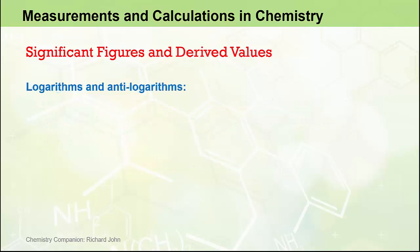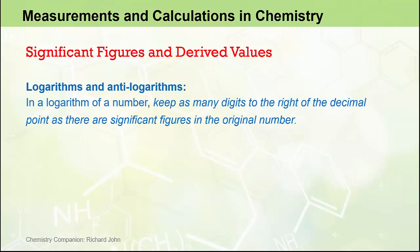Now we consider what we need to do when we take the log or the anti-log of a number. When we take the log of a number, we keep as many digits to the right of the decimal point as there are significant figures in the original number. So if we were to take the log of 9.57 × 10⁴, we know that number has three significant figures. When we log that number in our calculator, we need to ensure we have three digits to the right of the decimal place in the end answer — in other words, 4.981.